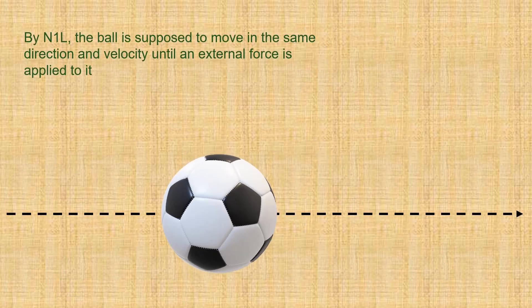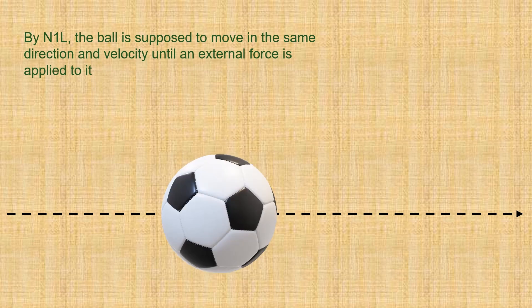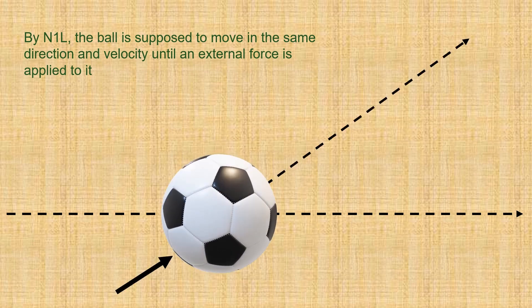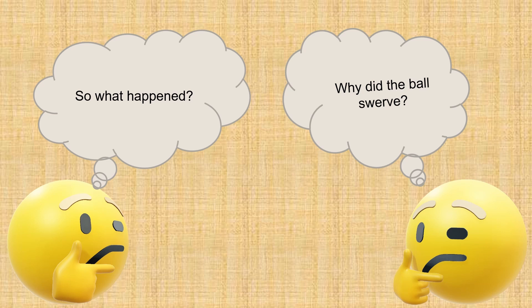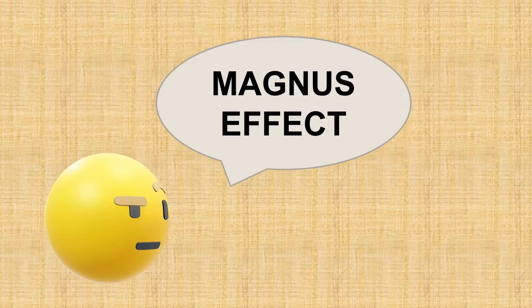By Newton's first law, the ball is supposed to move in the same direction and velocity until an external force is applied to it. So what happened? Why did the ball swerve? It is actually Magnus effect.